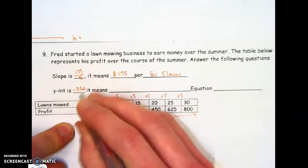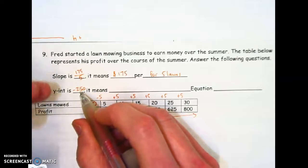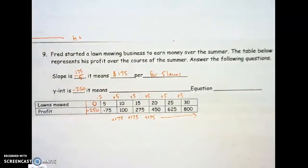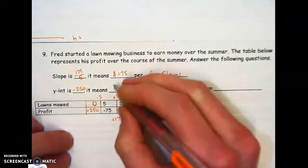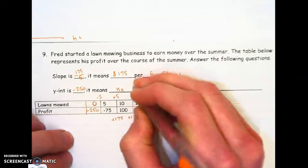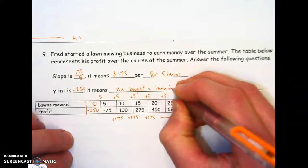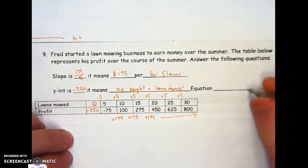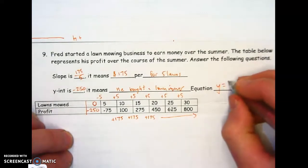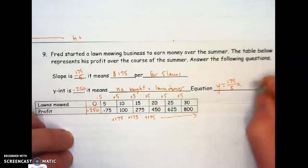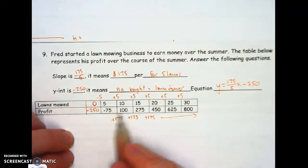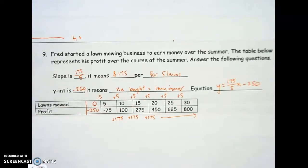Minus 250. We need to make sense of that. My guess is that before Fred started this business, he bought a lawnmower. And now he owes 250 bucks, and he needs to make that money back by starting to mow lawns. So I'm going to say he bought a lawnmower, and I'm going to write my equation. Y equals 175 over 5, that's five lawns. X minus 250. It cost him some money to start out to get that lawnmower. But as you see, time goes by. Fred does make some money. Over and out.